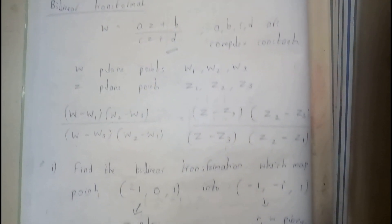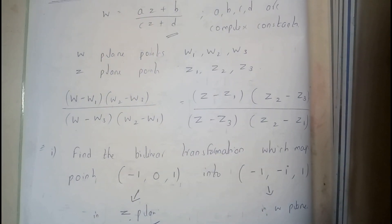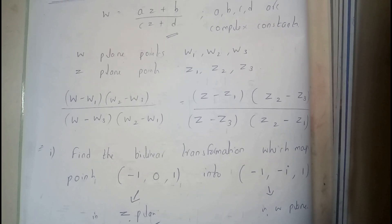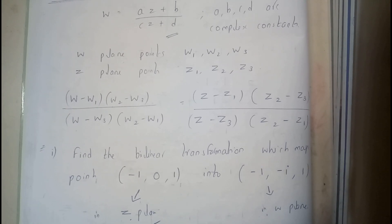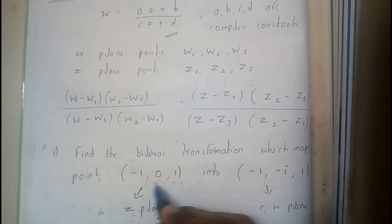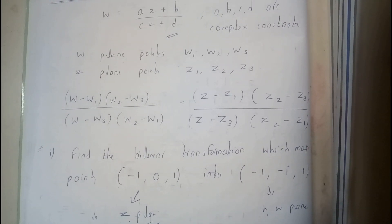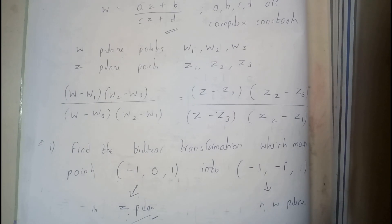These are nothing but the planes in which the points exist. Basically in the question he will not be defining or giving a statement that these belong to z plane or these belong to w plane. So the first set belongs to z plane and the second set belongs to w plane.